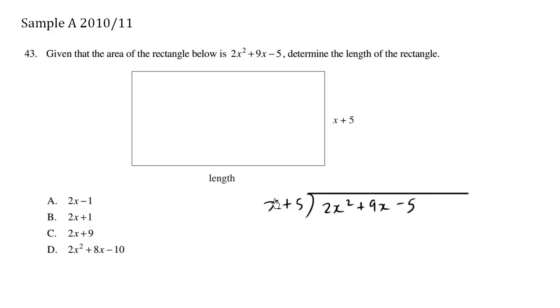How many times does x fit into 2x squared? We're just going to say 2x times. So we're going to multiply this times 2x. x times 2x is going to be 2x squared. Positive 5 times 2x is going to be positive 10x.